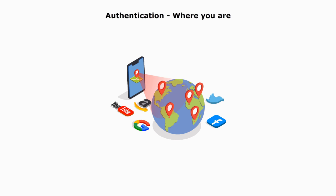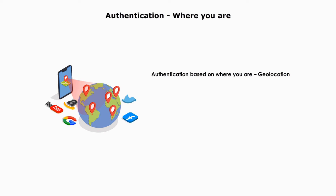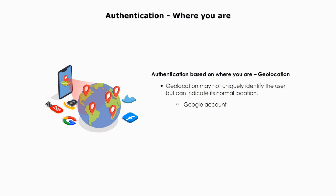Where you are — geolocation. The fifth type of authentication is based on the location of a person or device. Geolocation may not uniquely identify the user, but it can help prevent a hacker from performing malicious actions at locations different from the normal location. For example, if someone logs into your Google account in a different location, you will get a security notice asking about that activity. Many websites do not allow a user to access an account from different locations. This type of authentication is helpful to prevent remote attacks.